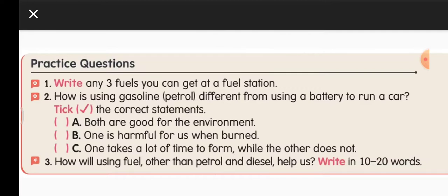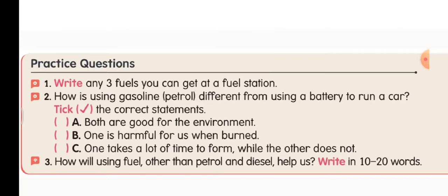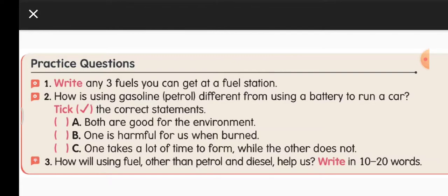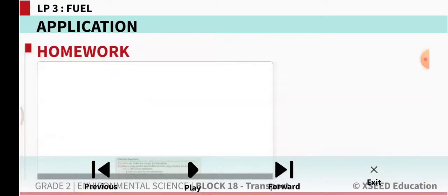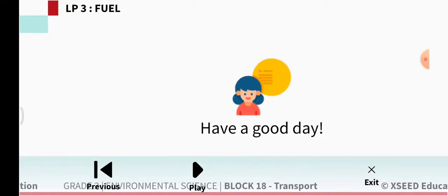Third question: how will using fuels other than petrol and diesel help us? Petrol and diesel will get exhausted one day — we won't have any left. So we need to save them and use other fuels like CNG and solar energy. You can write the names of some vehicles which can use CNG. Read the lesson from the content book twice and underline new words.